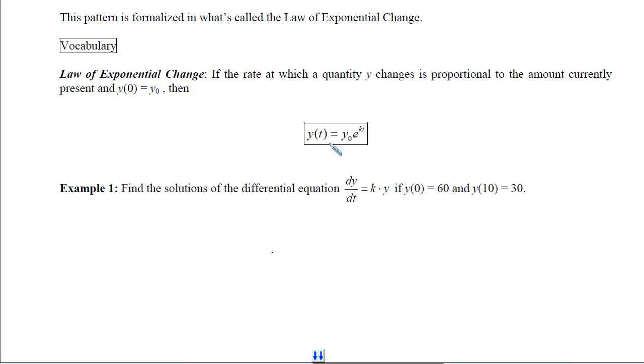We can recognize it as one of these types and simply jump to the solution. So with example 1, if I want to find the solution to this differential equation, we recognize that it satisfies the law of exponential change, so we already know that y will be y initial e to the kt. Then we use our points in order to figure out what y initial and k actually are. Because y(0) is 60, we know that y initial is 60.